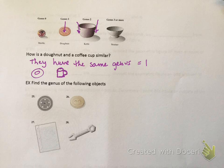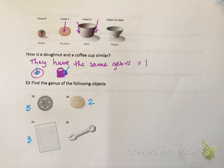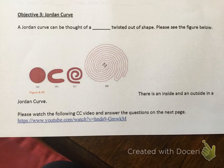A coffee cup has one through hole right through the handle. Now, find the genus of the following objects: number 25 has five through holes so the genus is five; number 26 is a button with two through holes so the genus is two; number 27 is a piece of paper with three holes so the genus is three; number 28 is a tool with one hole so the genus is one. A bowling ball would have genus zero — no through holes.